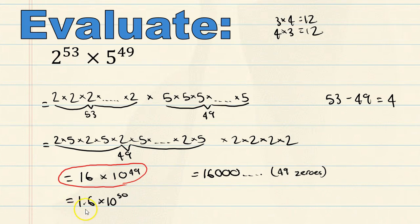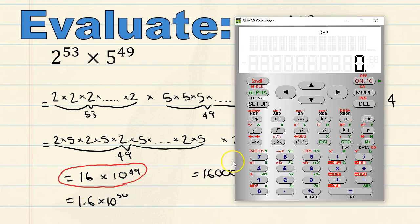In fact, let's look at what happens when I work this out on a calculator. 2 to the power of 53 multiplied by 5 to the power of 49 gives me 1.6 times 10 to the power of 50. You will notice that the calculator also gave us a solution in scientific notation. The calculator also cannot fit the whole number, so they had to use scientific notation, just like us.